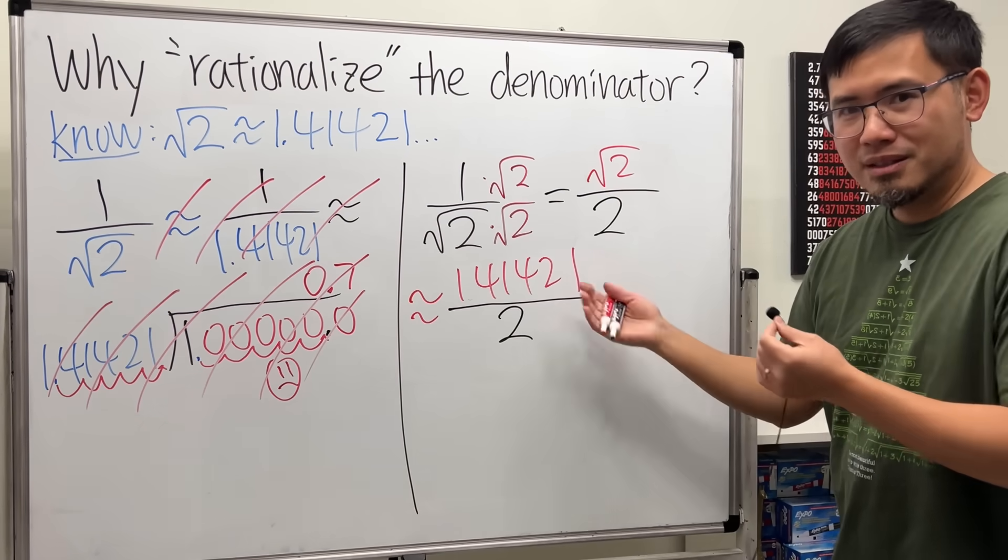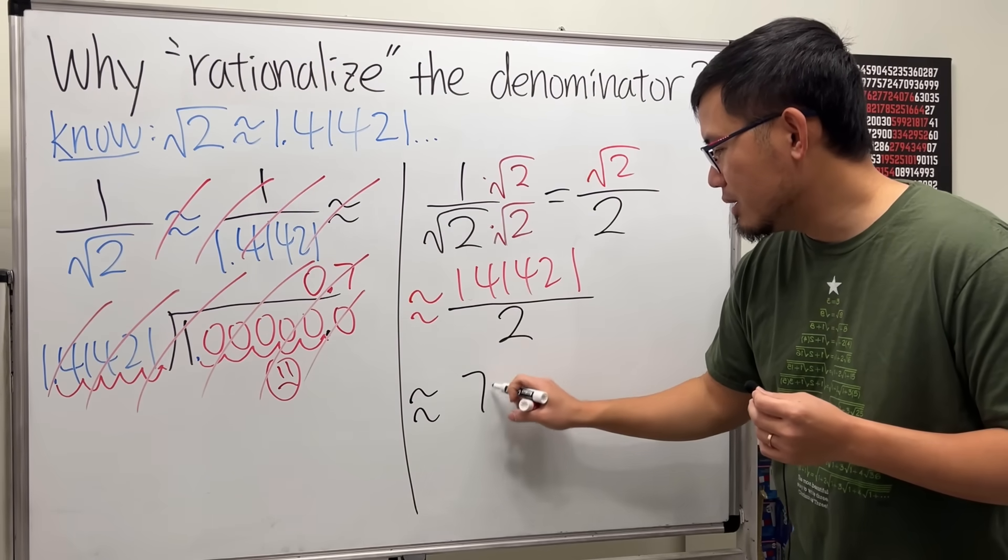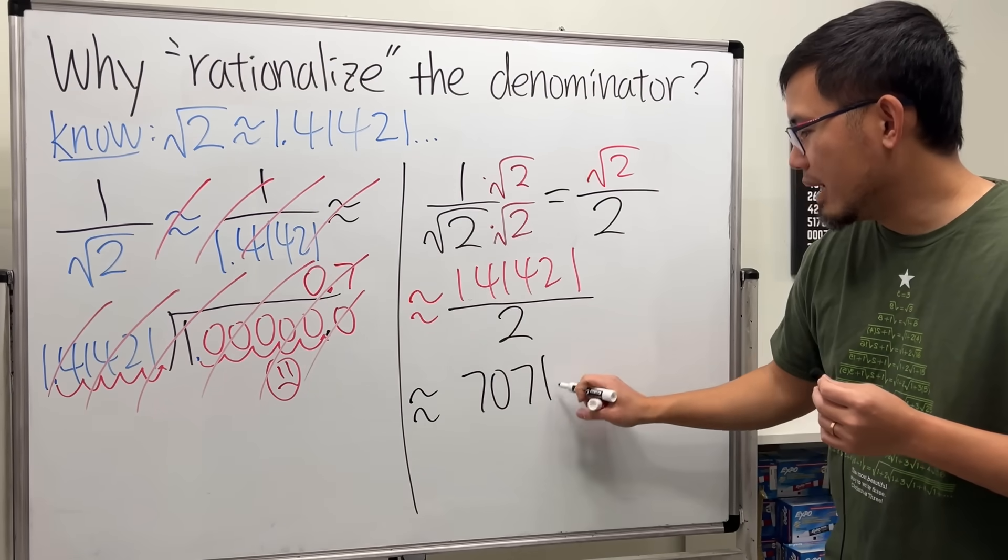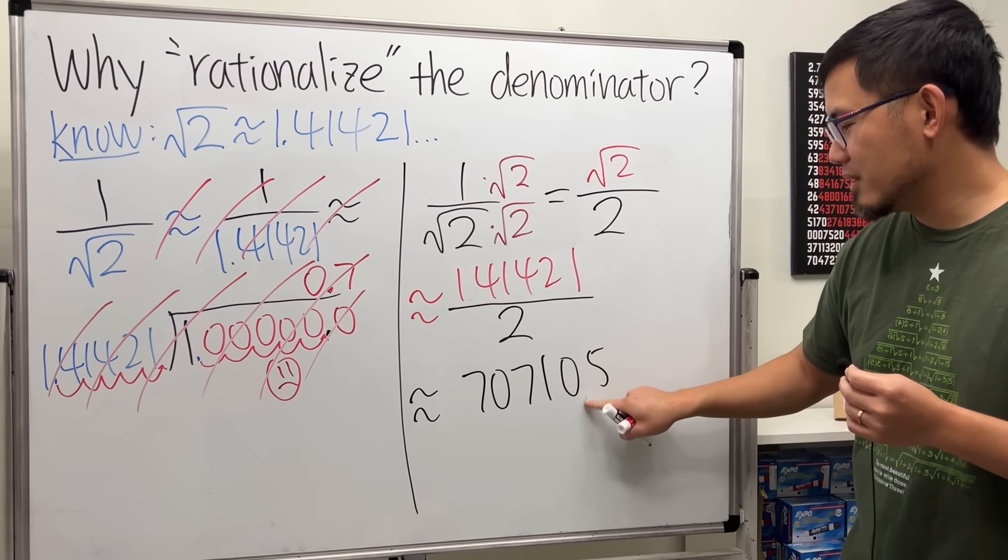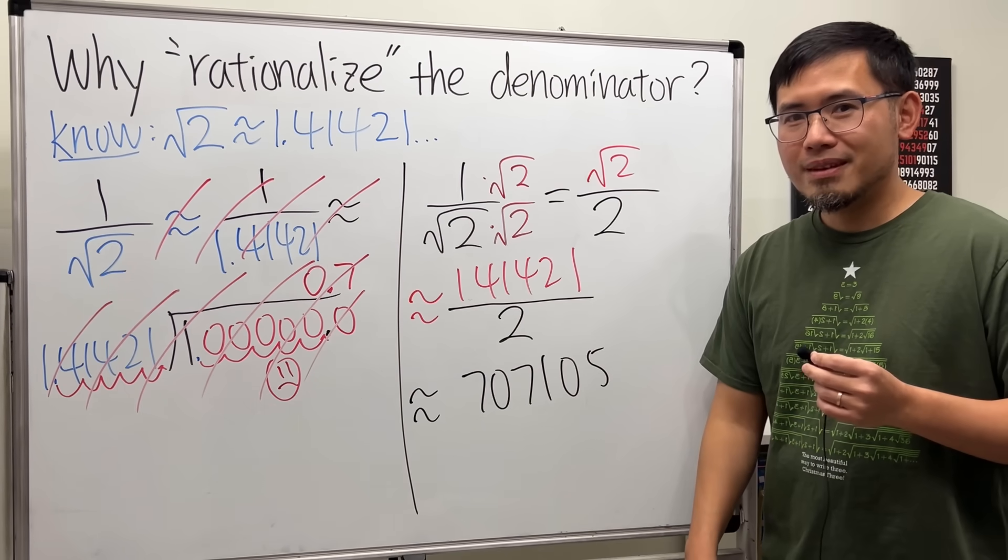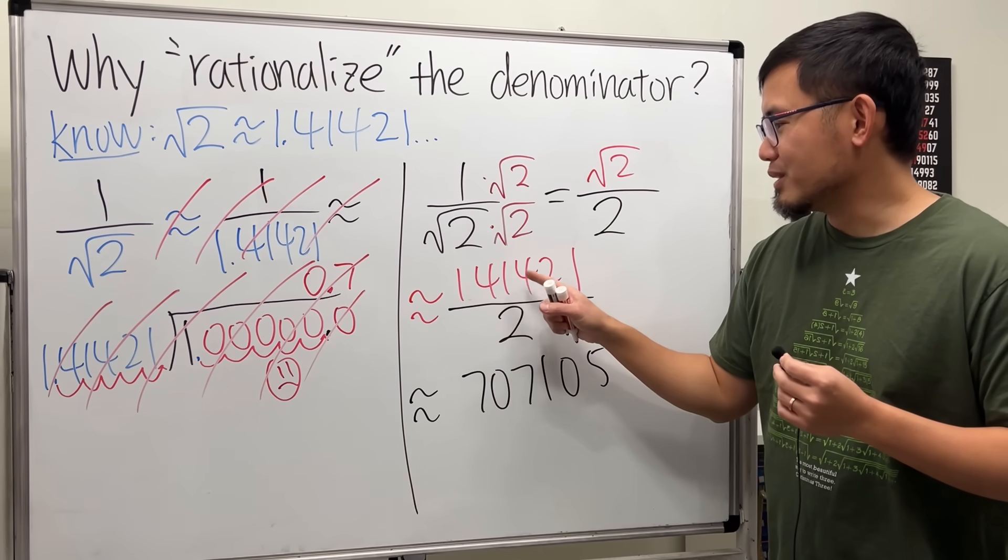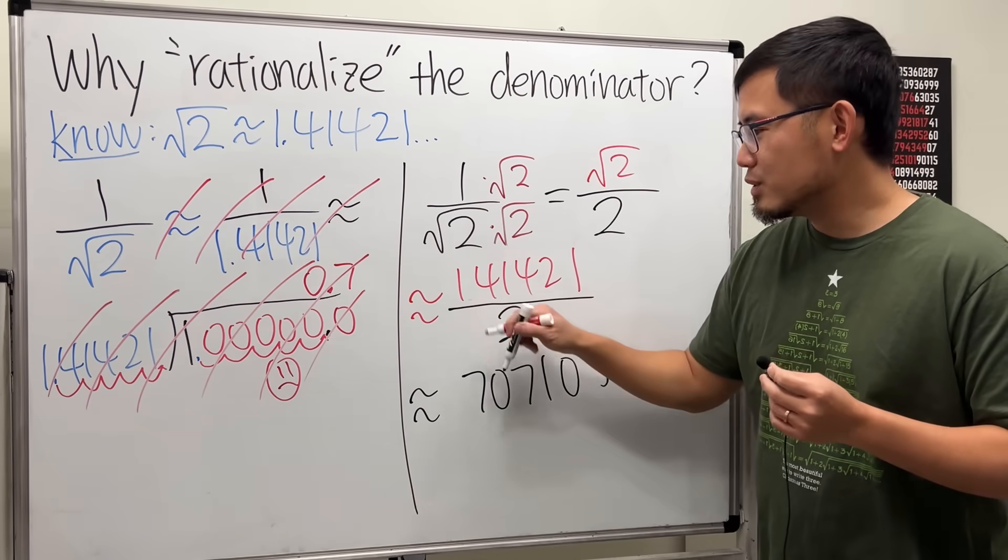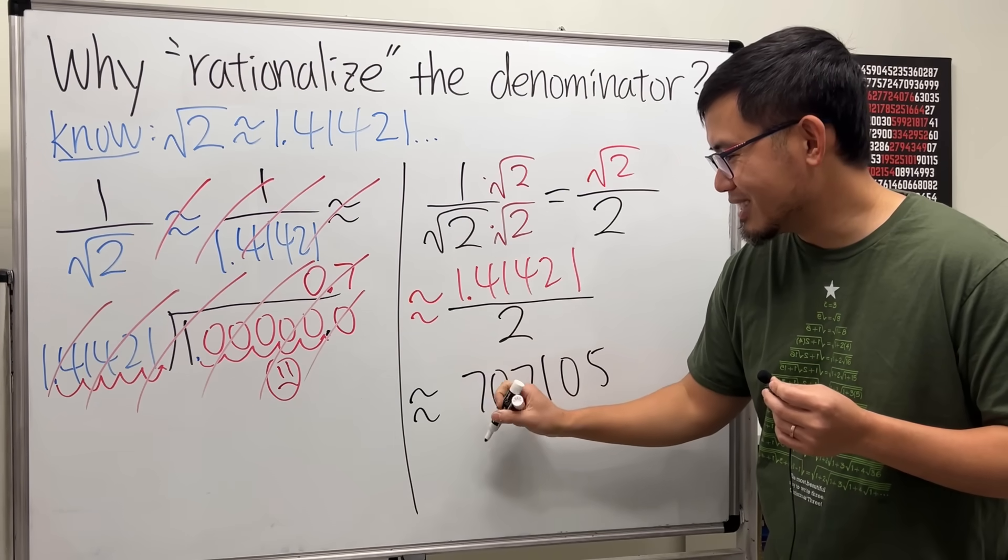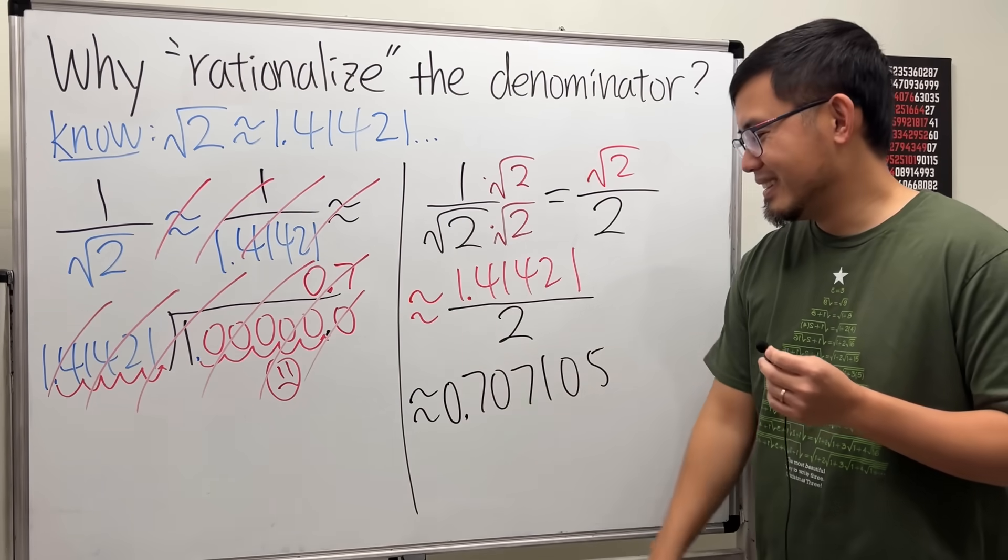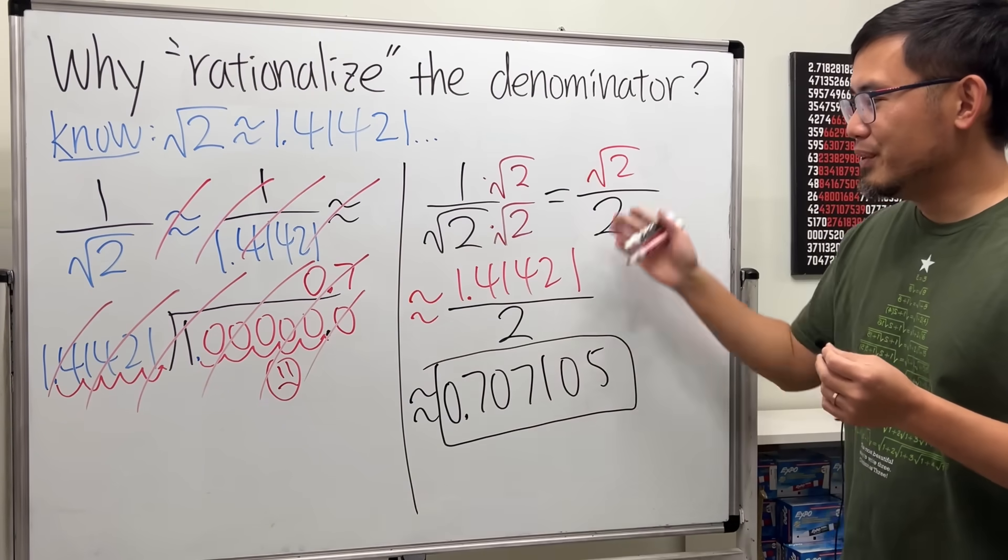When we talk about money, it's easier, right? We get approximately 70,710.5. This is a decimal point here for the last digit. But of course, it wasn't 141,421 dollars, it's 1.41..., so you maintain the decimal right here.